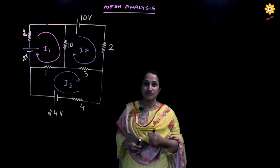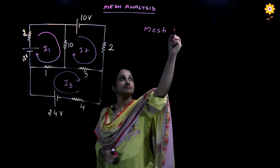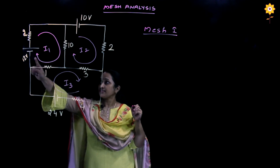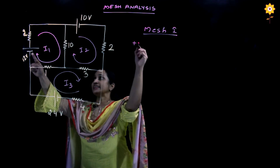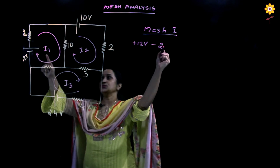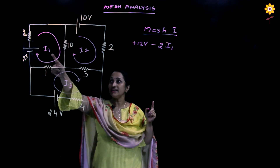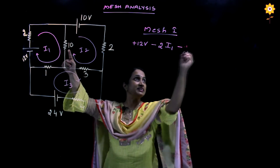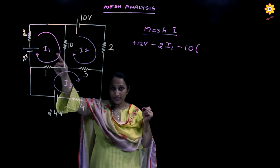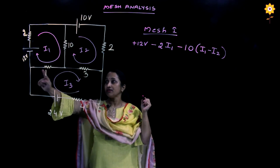The next step is writing Kirchhoff's voltage law for each mesh. For mesh 1, the current first touches the negative sign of the source, so we write it as plus 12 volts. Next is a 2-ohm resistance, so minus 2 times I1. Through the 10-ohm resistor, two currents flow — I1 and I2 — so we write minus 10 times I1 minus I2.